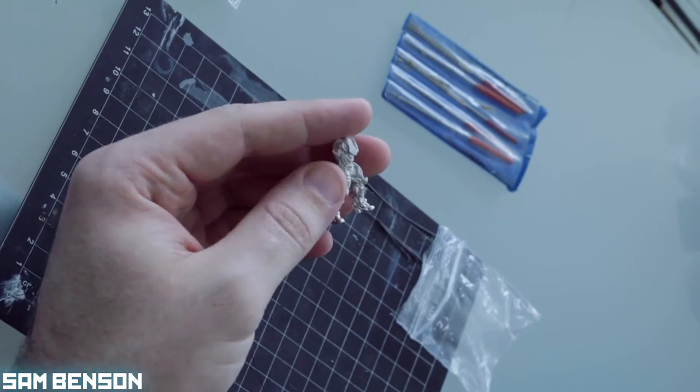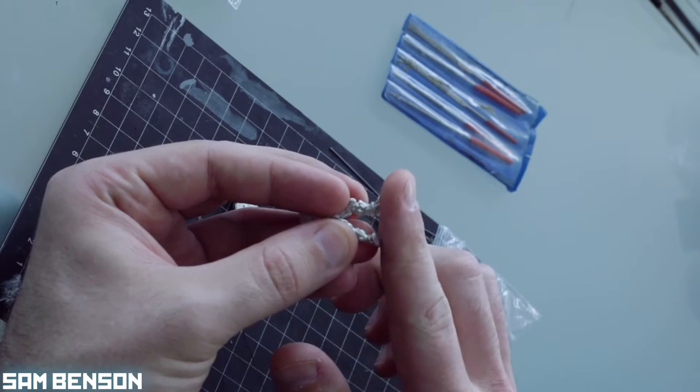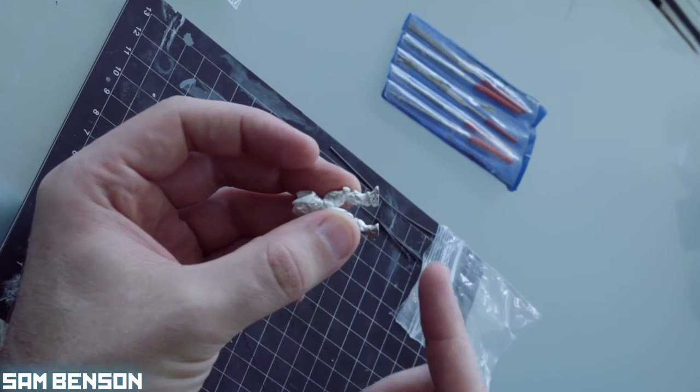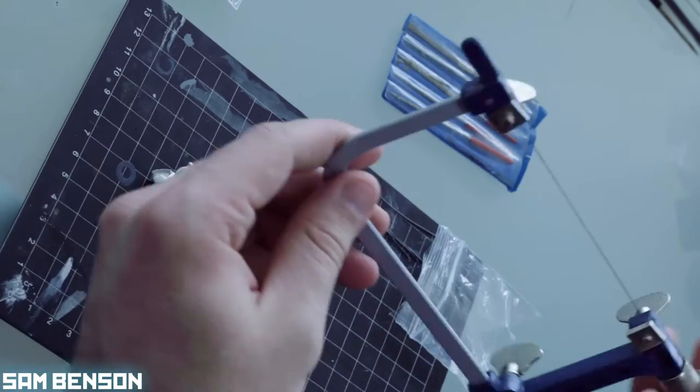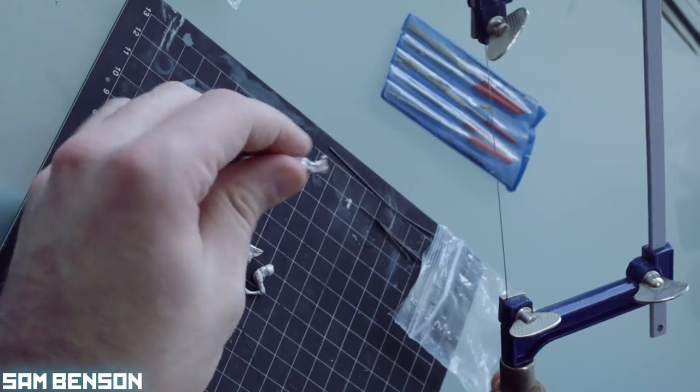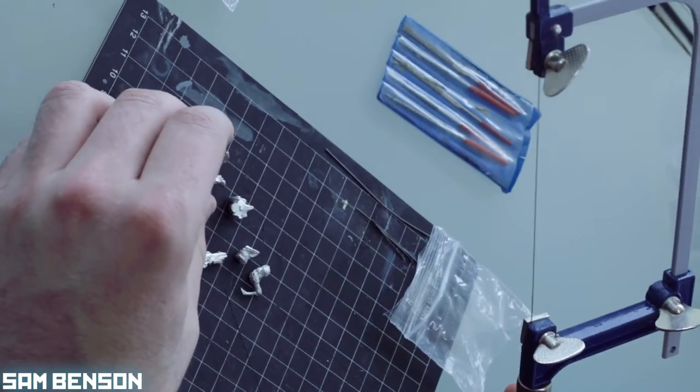Ready to start the main cleanup job. I've already cut him from his slot base. I use the jeweler saw to cut the slot base off because it gives you a really accurate cut.